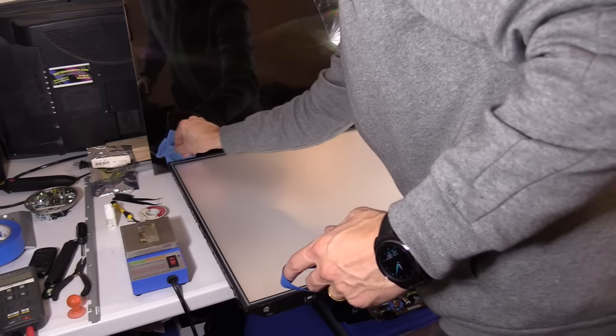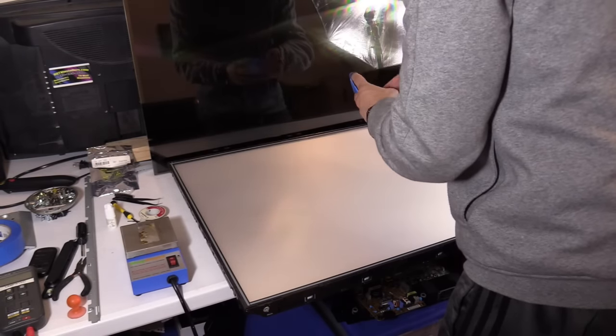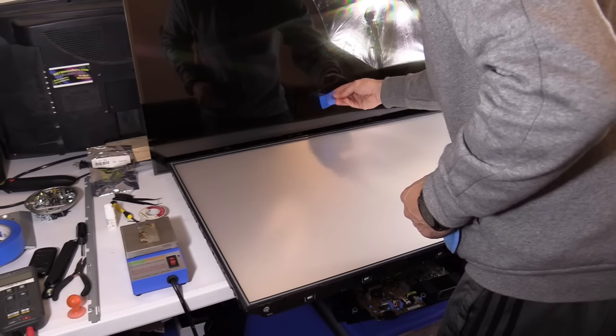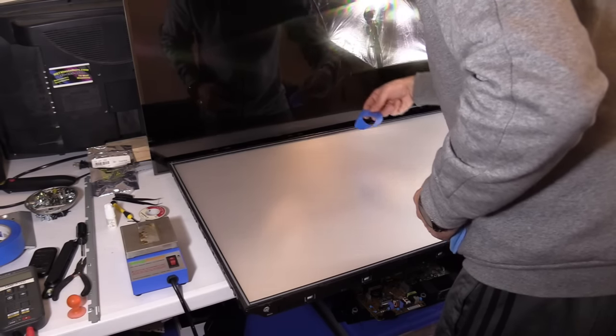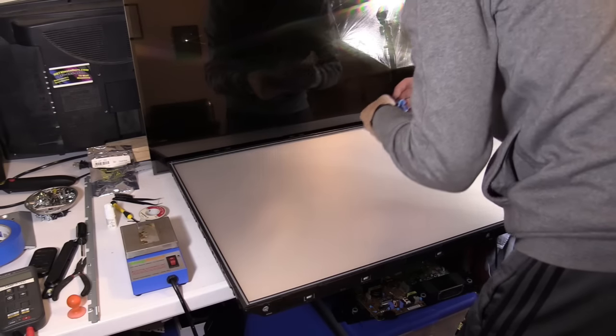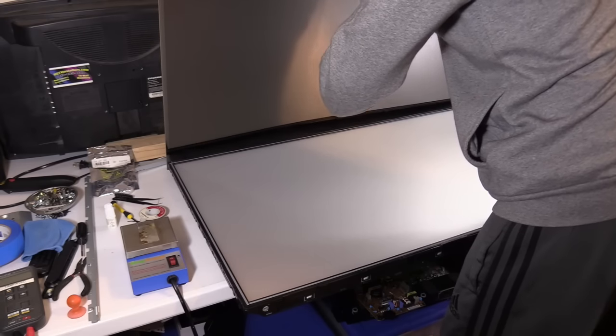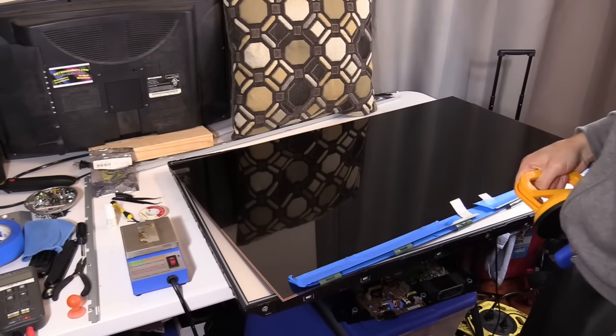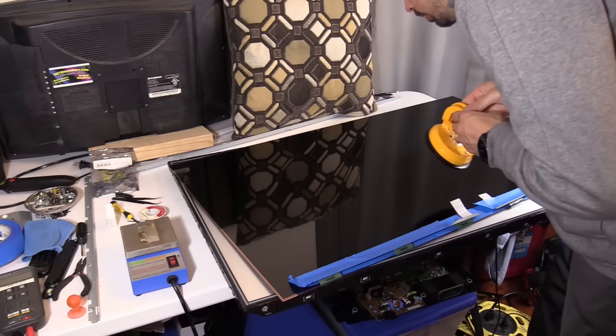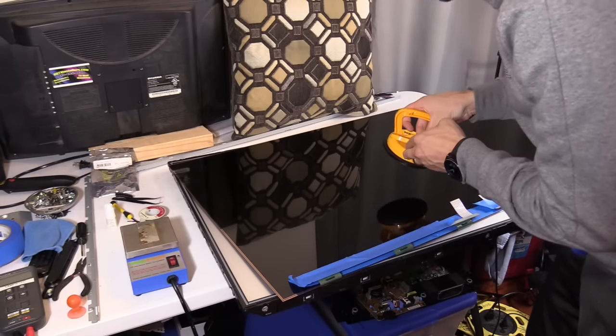And then we're going to wipe everything down, make sure it's dust free. I used painter's tape to remove any excess dust that the microfiber cloth missed. And then it takes really two people to put this down, the LCD panel down. Don't put too much faith in these suction cups.